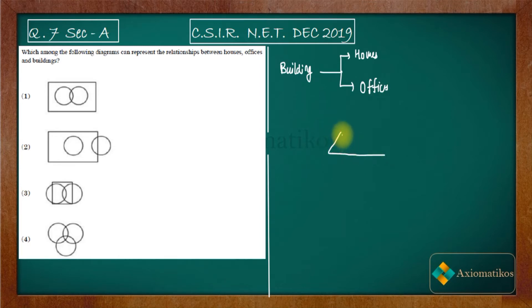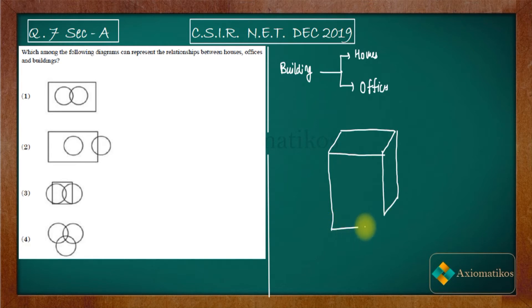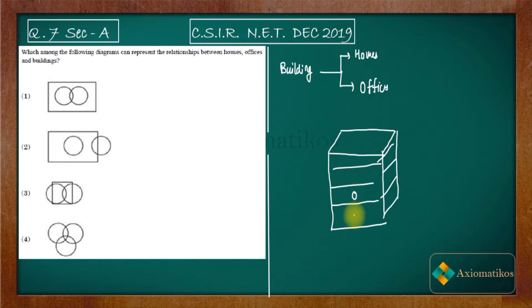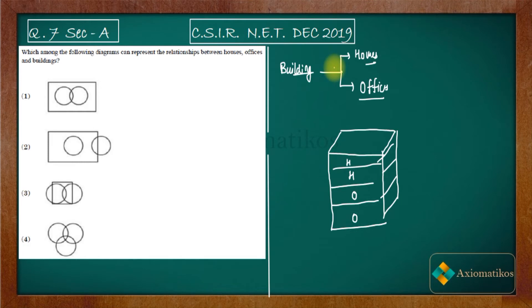Consider a four-story building. It can happen that the initial two floors consist of offices and the last two floors consist of houses for people. That means the building will consist of offices as well as houses.